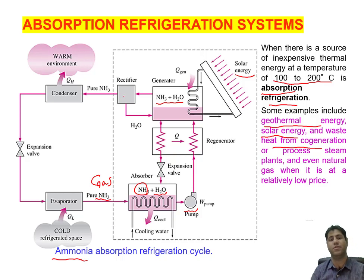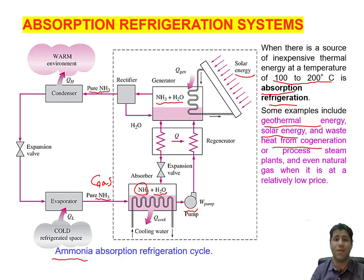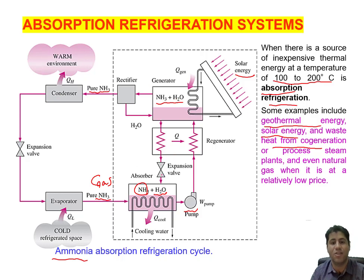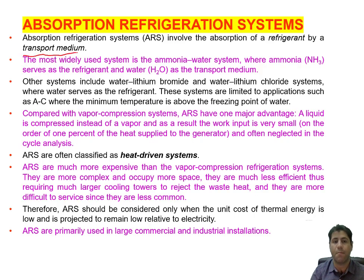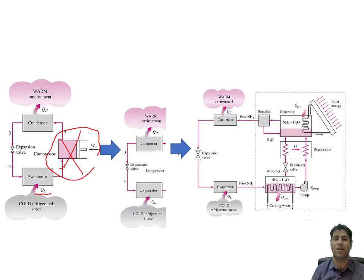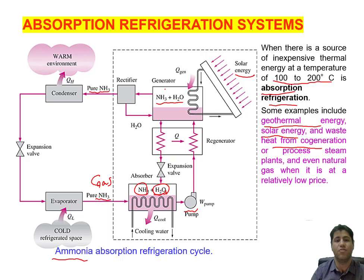The separated ammonia is sent to a rectifier, which is designed to prevent water from entering the condenser. Then pure NH₃ — now at higher pressure — is introduced to the condenser. The compression effect here is achieved by transportation: water acts as the transport medium, carrying ammonia from the absorber to the generator.